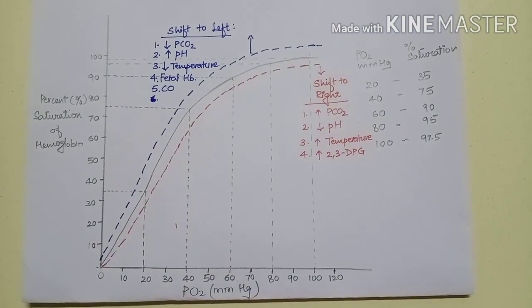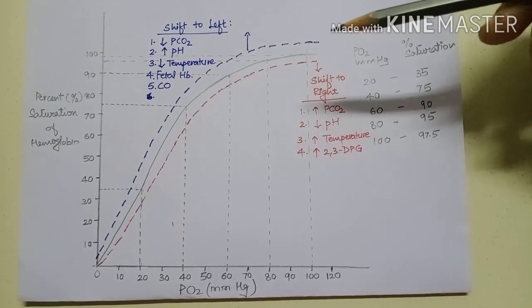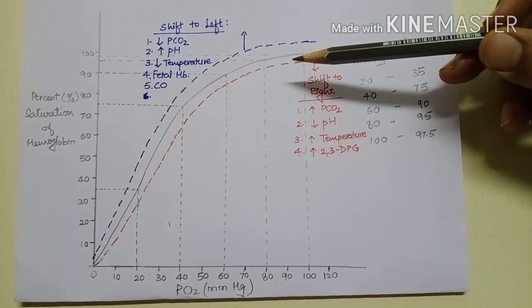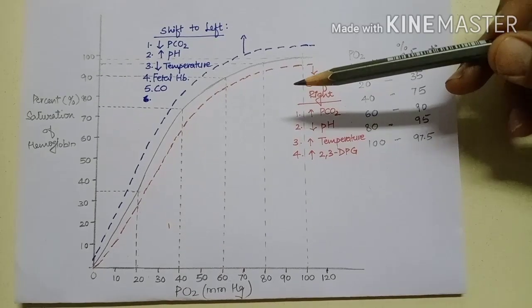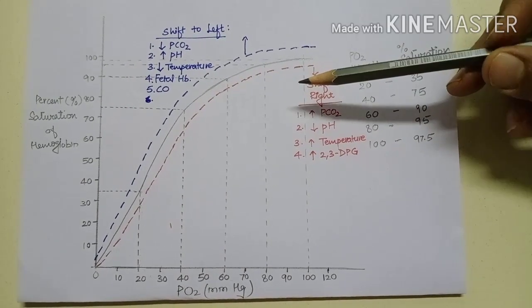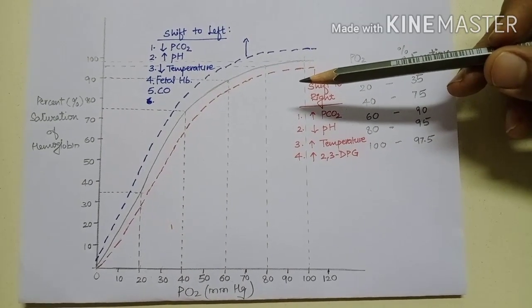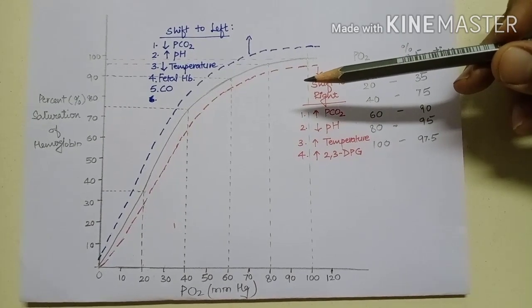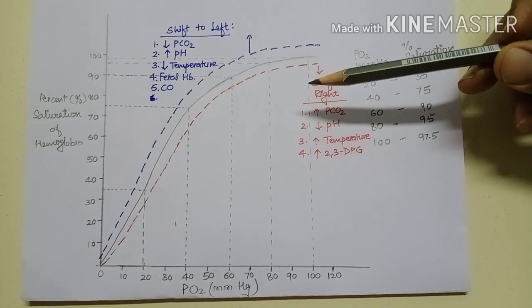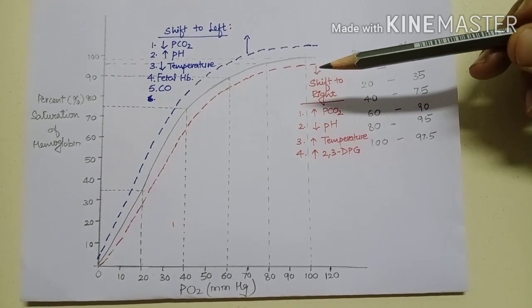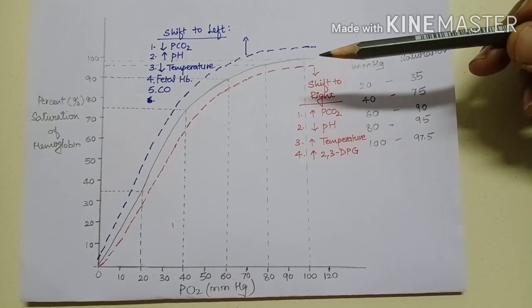What is Bohr's effect? A shift of the oxygen-hemoglobin dissociation curve to the right in response to increase in blood carbon dioxide and H+ ions has a significant effect by release of oxygen from the blood in the tissues. This is Bohr's effect.